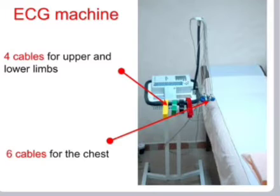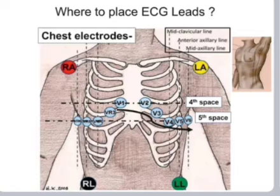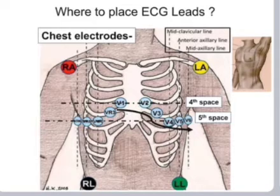The ECG machine has four cables for the upper and lower limbs and six cables for the chest. The limb leads are: red for right arm, yellow for left arm, black for right leg, and green for left leg. Chest electrodes V1 and V2 are in the fourth intercostal space, V3 and V4 in the mid-clavicular line, V5 in the anterior axillary line, and V6 in the mid-axillary line.